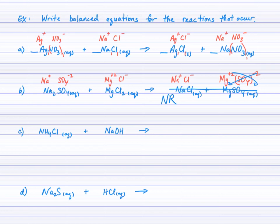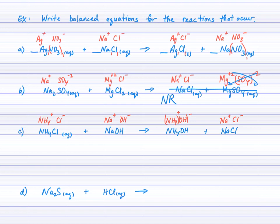For example C, figure out the ions each reactant is formed from, switch partners, cross charges down, and write your products. You should get ammonium hydroxide and sodium chloride. Checking the solubility guidelines, both are aqueous, so no precipitate is formed. However, ammonium hydroxide does decompose into ammonia gas and water — so there are actually three products here due to the rapid decomposition of the ammonium hydroxide.